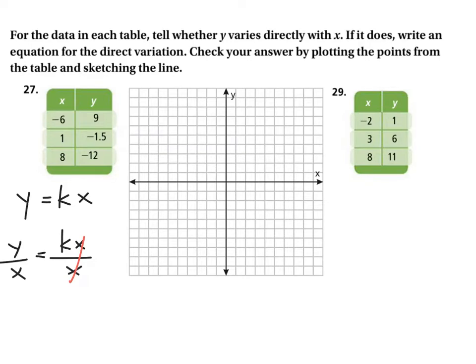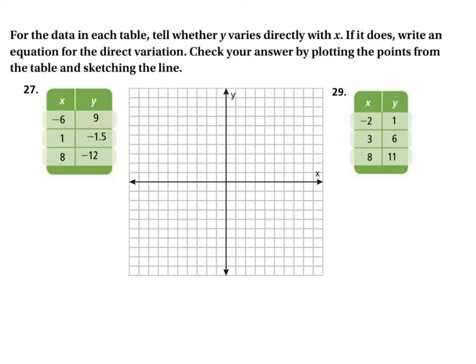We get that k is equal to y divided by x. If we repeatedly divide each y by its matching x and we always get the same number, it is a direct variation equation. If we don't get the same number, it's not a direct variation equation. So we use k equals y divided by x repeatedly.